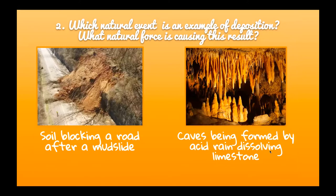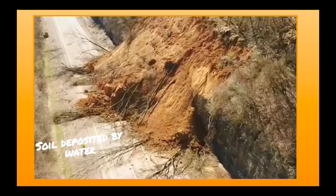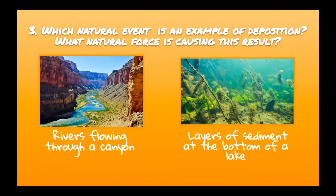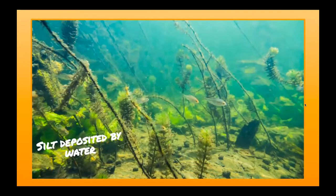Question three: which event is an example of deposition? A river flowing through a canyon, or layers of sediment at the bottom of a lake? The correct answer is the silt deposited by water at the bottom of a lake. Sediment at the edges of a pond washes into the water and eventually settles to the bottom due to gravity, causing that muddy silt at the bottom.